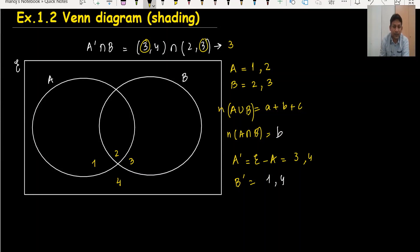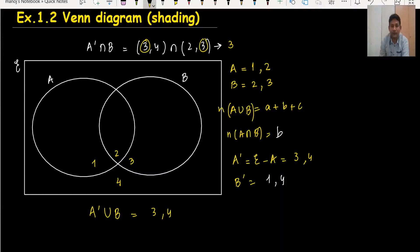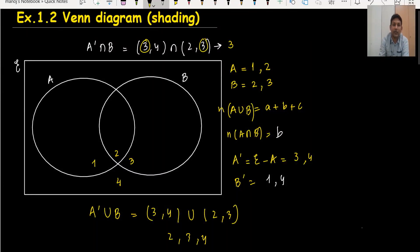Now suppose A complement union B. For A complement we have areas 3 and 4. For B we have areas 2 and 3. Union means we combine all of them: 3, 4, and 2. So the result is areas 2, 3, and 4. I will shade 2, 3, and 4. This is a very important part of shading sets in a Venn diagram.